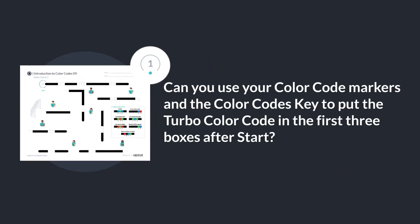Can you use your color code markers and the color code's key to put the turbo color code in the first three boxes after start?